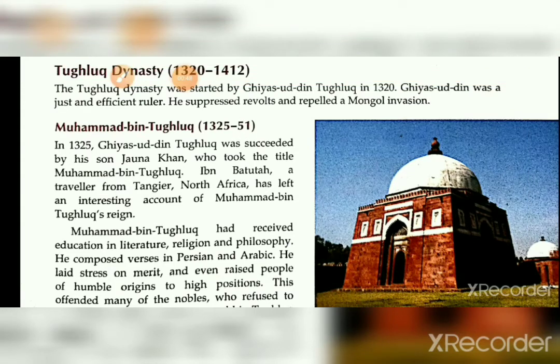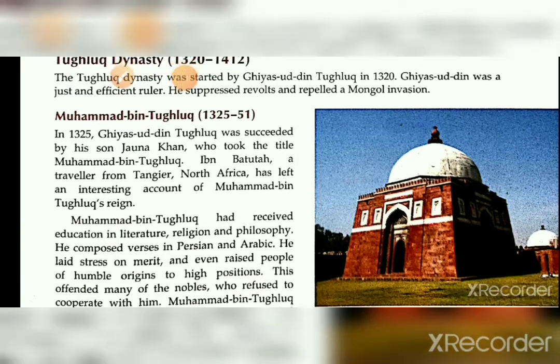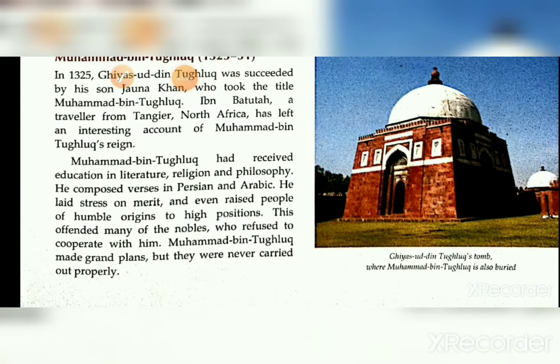We can learn more about Muhammad bin Tughlaq through the writings of Ibn Battuta, a North African traveler. Muhammad bin Tughlaq had good knowledge in various subjects such as science and literature. He changed the system of succession — previously a noble's son would inherit the position, but Muhammad bin Tughlaq assigned rank based on talent and quality. This made nobles his enemies, as he cancelled the traditional policy of succession. He tried to implement many new ideas, but they were not at all successful.